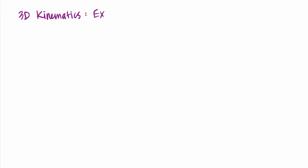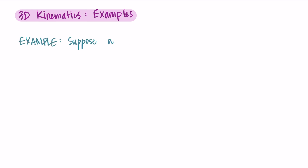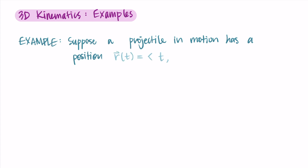Hi, welcome. In this video I'm going to go through two examples of doing kinematic problems involving position, velocity, and acceleration. The first problem will have us doing derivatives and the second problem will have us integrating. For the first example, let's suppose a projectile in motion has a position given by r(t) = ⟨t, t³ - 10, eᵗ⟩ for some time t, and let's find the velocity and acceleration vectors at t = 5.